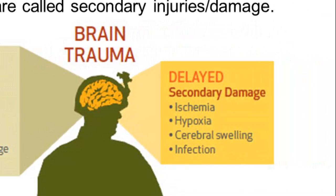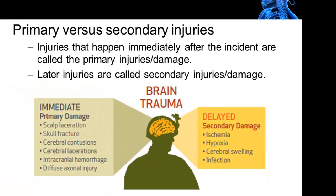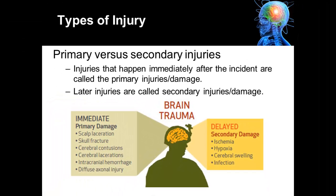Later injuries are called secondary injuries. These are delayed. They usually involve things such as ischemia, which is a lack of blood supply to part of the brain, hypoxia, which is a lack of oxygen to the brain that can happen after the injury, as well as infection that may set in, as well as cerebral swelling. In summary, a primary injury is the injury that occurs at the time of the incident, whereas secondary injuries are injuries to the brain that occur later as a consequence of the primary injury.